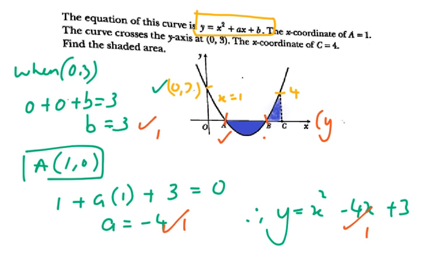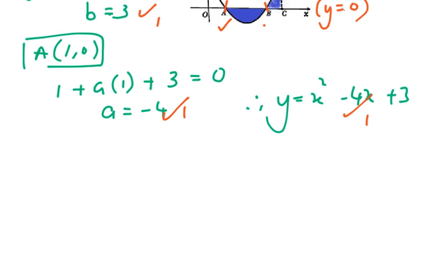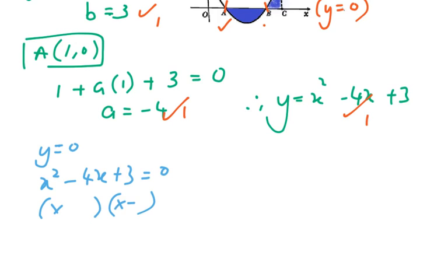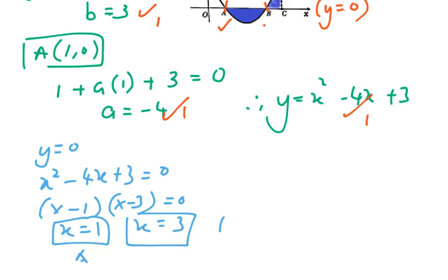Point B is lying on the x-axis, meaning y is equivalent to 0. So we proceed by letting y equal 0: x squared minus 4x plus 3 equals 0. Factorizing this quadratic equation gives (x minus 3)(x minus 1) equals 0, so x equals 1 and x equals 3. x equals 1 is the coordinate of A, and therefore x equals 3 gives coordinate B as (3, 0).